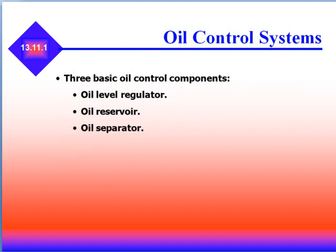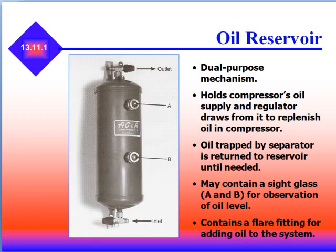For oil control systems there are three basic components: an oil level regulator, oil reservoir, and oil separator. The oil reservoir is a dual purpose mechanism — it holds the compressor's oil supply, and the regulator draws from it to replenish oil in the compressor. The oil trapped by the separator is returned to the reservoir until needed. It may contain a sight glass for observation of the oil level and a flare fitting for adding oil to the system.